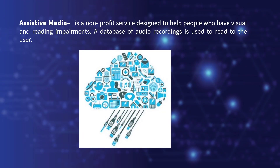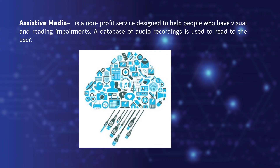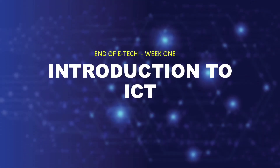The last trend in ICT is assistive media. Assistive media is a non-profit service designed to help people who have visual and reading impairments — a database of audio recordings is used to read content to the user. Those are the trends in ICT: convergence, social media, mobile technologies, and assistive media. That's the end of E-Tech week one: Introduction to ICT.